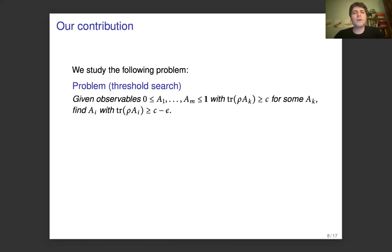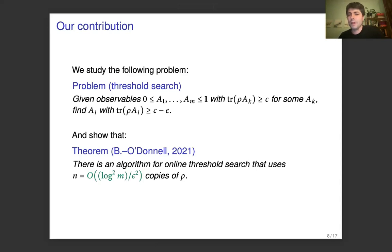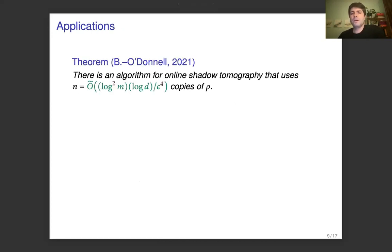In this work, we study the threshold search problem, where we're given observables a1 to am, and we're promised that the probability of some a_k with respect to rho — so trace(rho * a_k) — is at least c, for some fixed c between 0 and 1. We're tasked to find an a_i with a probability that's at least c minus epsilon. We showed that there's an algorithm for the online version where the observables are given in an online fashion, for threshold search that uses log^2(m) over epsilon squared copies of rho. You can use threshold search to implement the teacher in the online learning algorithm, and as an application, we obtain an algorithm for online shadow tomography that uses log^2(m) times log(d) over epsilon^4 copies of rho. This has the best dependence on all the parameters m, d, and epsilon currently.